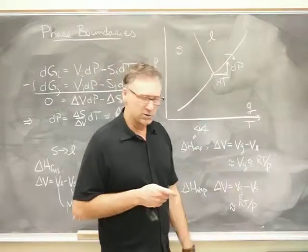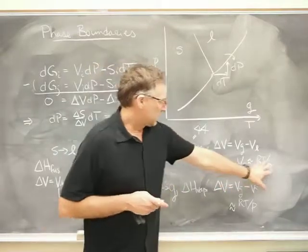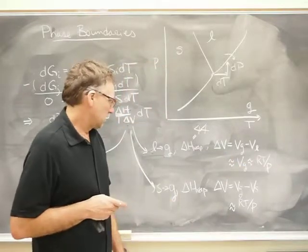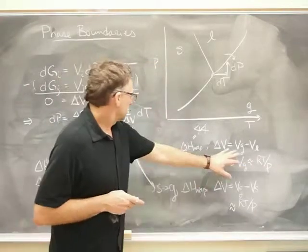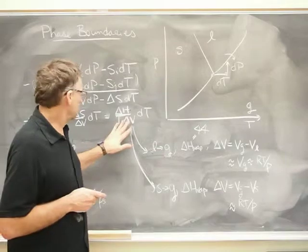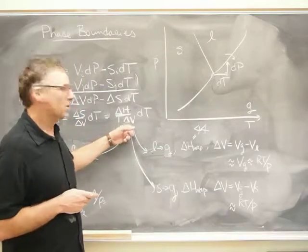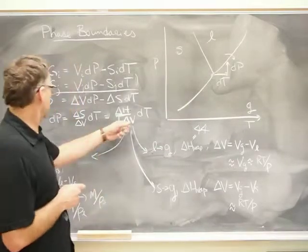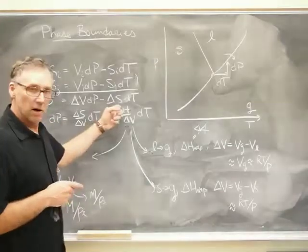Then we use the ideal gas law. And so we say that the volume of the gas is equal to RT over P. And so that term comes down here. You notice they have a pressure term here. We can do a separation of variables, then bring the pressure over this side.